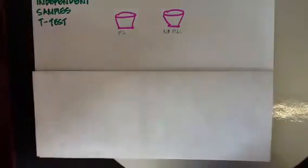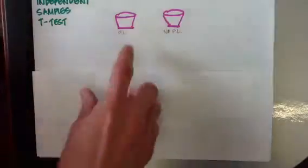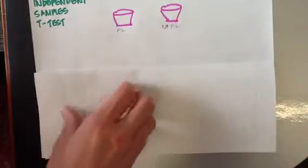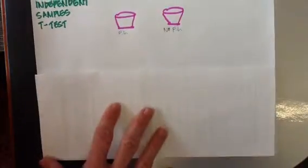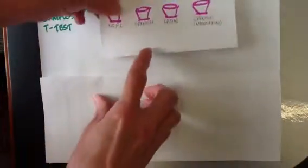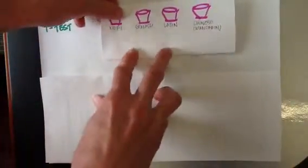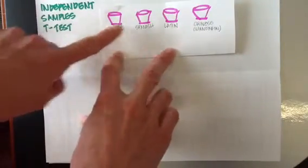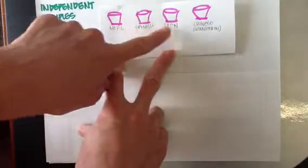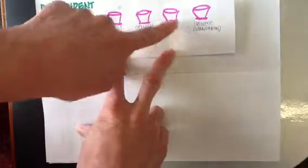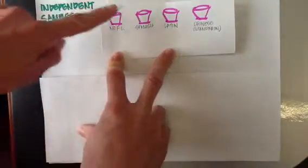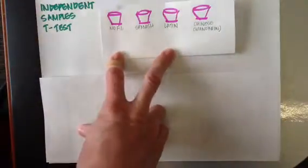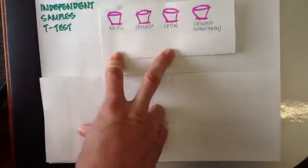Let's say, though, that instead of just comparing students who had foreign language to students who had not, I wanted to compare students who had no foreign language — my control group — to students who had taken Spanish, Latin, and Mandarin Chinese. So now I actually have four different groupings as opposed to two.